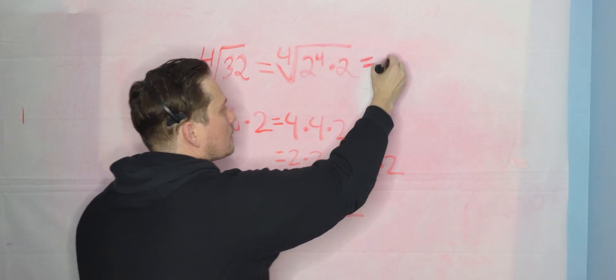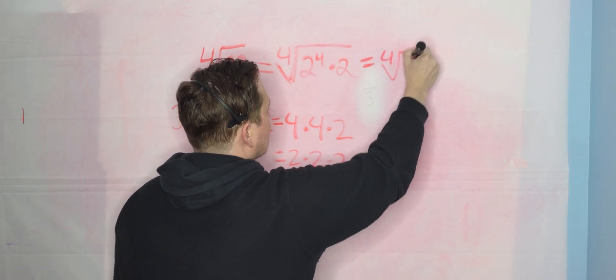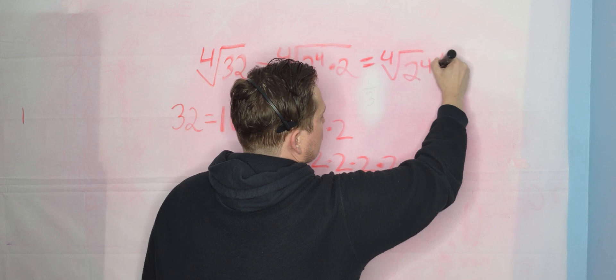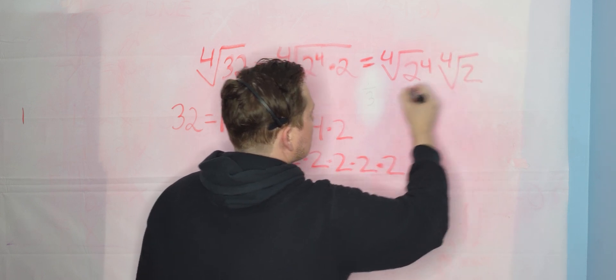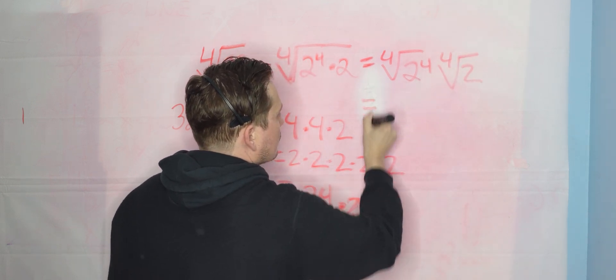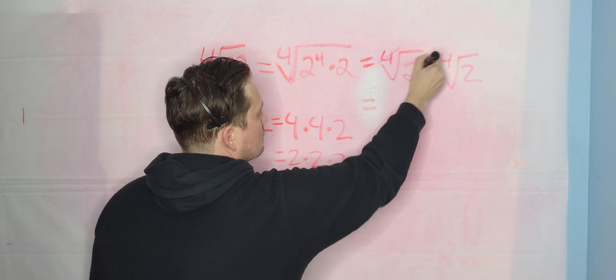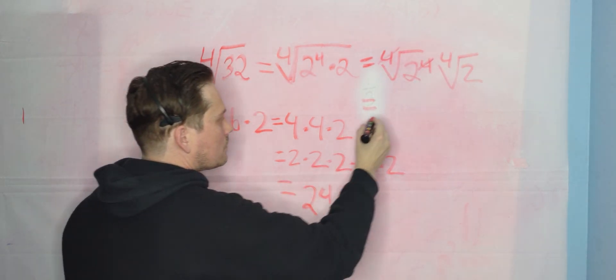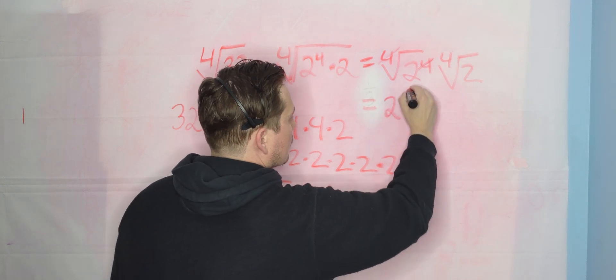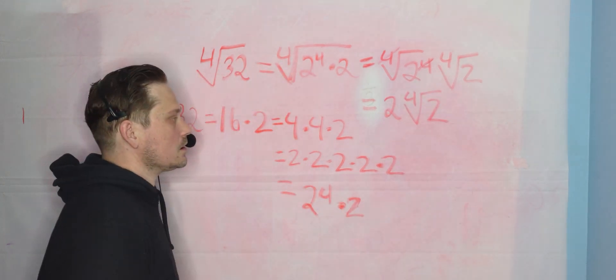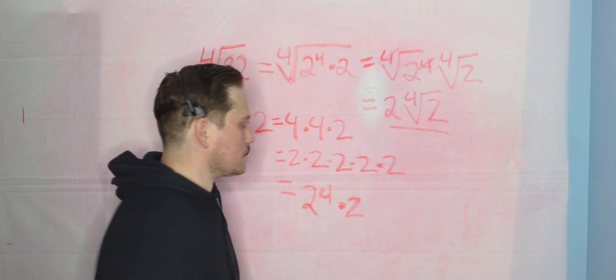Take a look. So you can say the 4th root of 2 to the 4th times the 4th root of 2. This is allowed, not a problem. But now notice that this cancels with this and all that remains is 2 and then the 4th root of 2. And then you can think of this here as your answer.